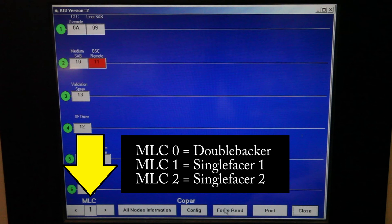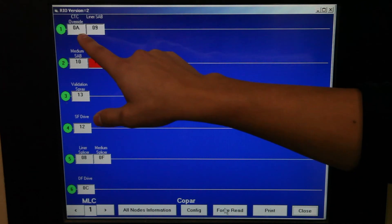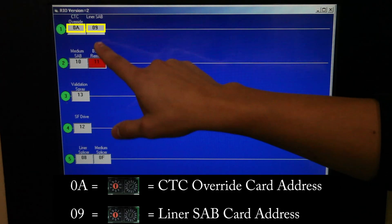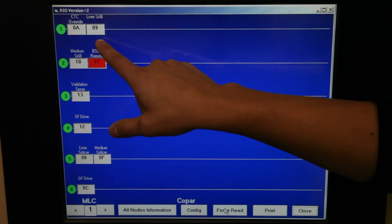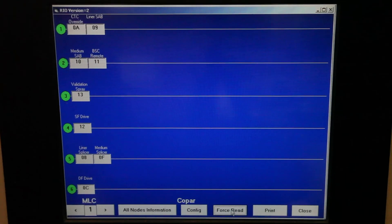Here we are looking at MLC 1. Channel 1 has two cards connected, CTC Override and LanerSAB cards. The value inside each box is the correct address for each card. The values in these boxes do not change. You can use this screen as a reference to verify the address switches on a card are set correctly. As you can see, we have an error on channel 2. That's the BSC remote. This is an indication that there may be a problem on channel 2. What we found was that one of the cards had the jumper set wrong.